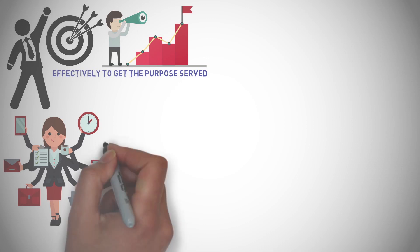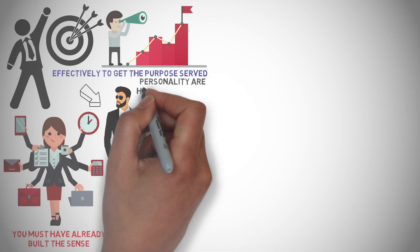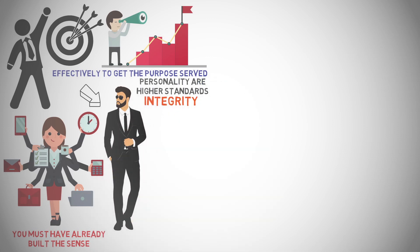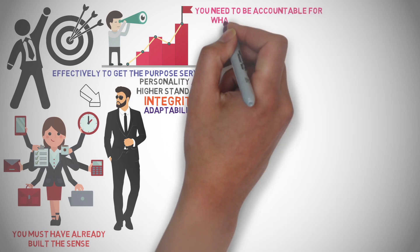3. Having sought who you are and what you want, you must have already built the sense of what sort of personality you want to achieve. What you must ensure in your personality are higher standards, integrity, and adaptability. You need to be accountable for whatever you say or do. It further requires you to think beyond self and be open to change.